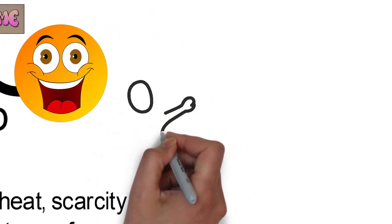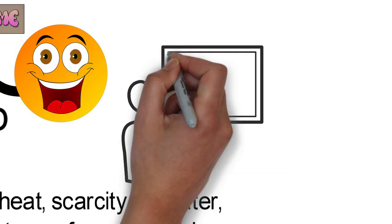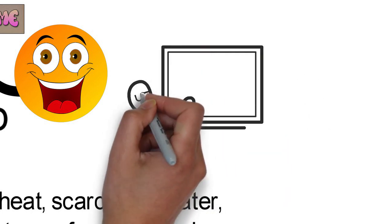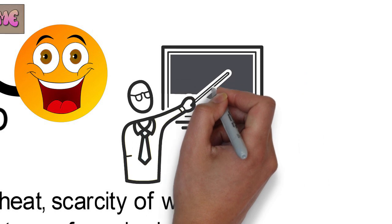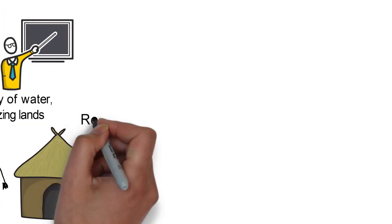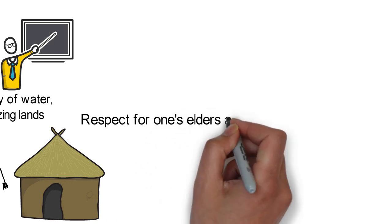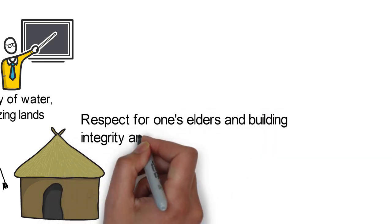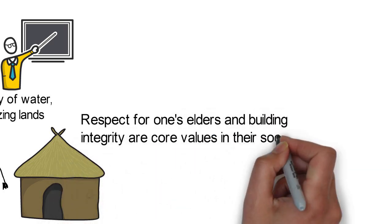The basic unit of the Somali society is the family. The mother is responsible for raising the children, although the father is also involved, especially in their religious training. Respect for one's elders and building integrity are core values in their society, and such are emphasized.